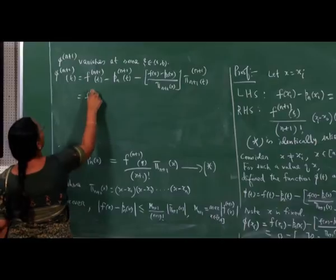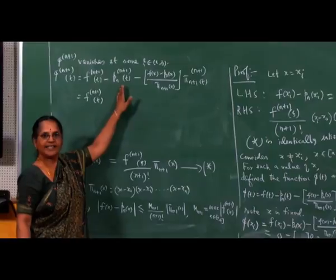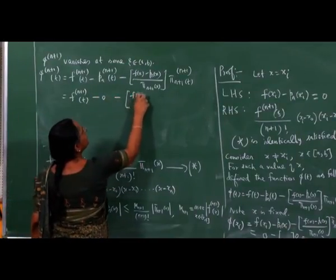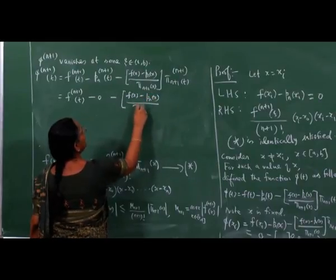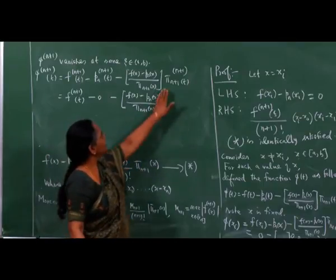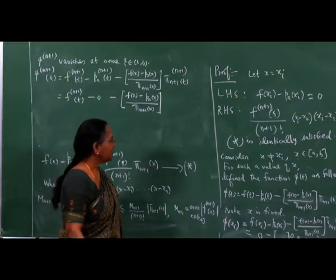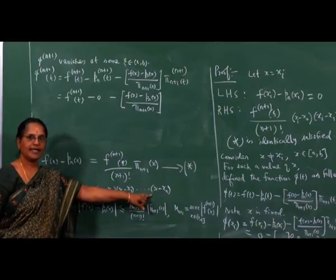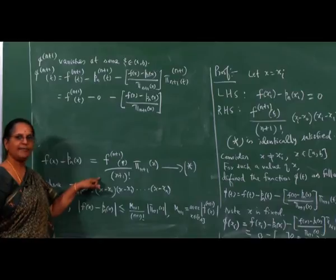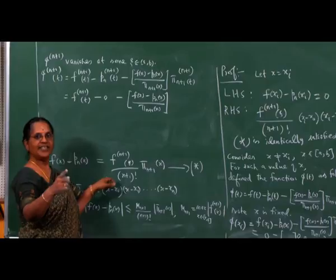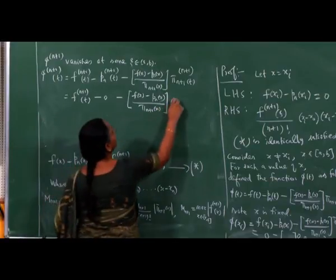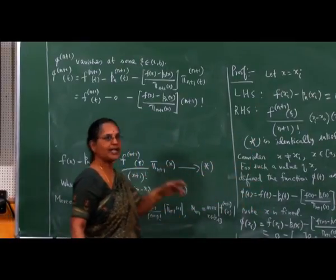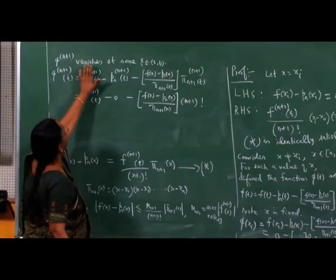This gives the (n+1)th derivative of f at t. Since p_n is a polynomial of degree at most n, its (n+1)th derivative is 0. Since π_{n+1}(t) is a polynomial of degree n+1 with leading term t^{n+1}, differentiating n+1 times gives (n+1)!. Application of Rolle's theorem in succession n+1 times gives that the (n+1)th derivative of φ vanishes at some ψ.